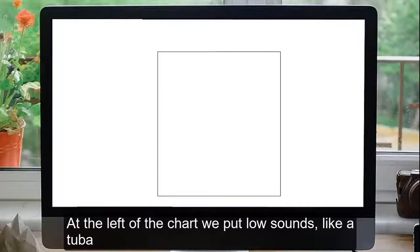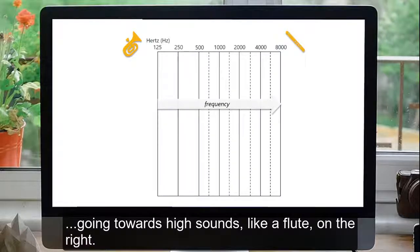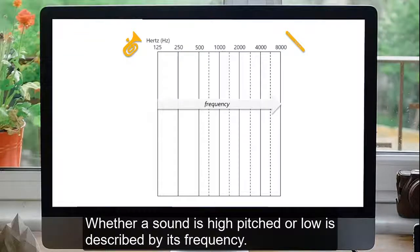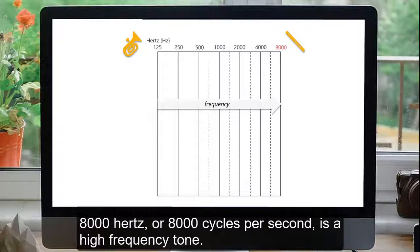At the left of the chart, we put low sounds like a tuba going towards high sounds like a flute on the right. Whether a sound is high pitched or low is described by its frequency. 125 Hz, which means 125 cycles per second, is a low frequency tone. 8000 Hz, or 8000 cycles per second, is a high frequency tone.